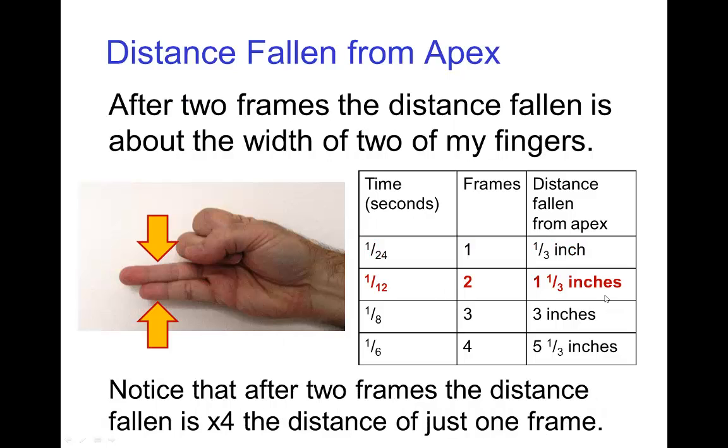After two frames, the distance is about one and a third inches. Of course, most animators don't have to be that precise. The idea is it's approximately the width of two fingers after two frames. So that's the distance something falls from an apex after two frames.